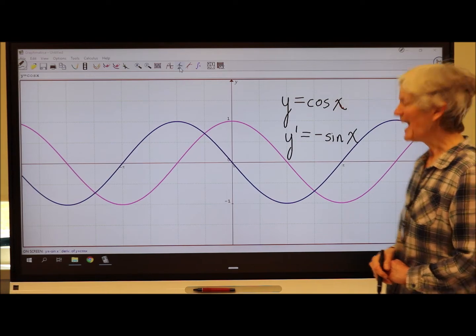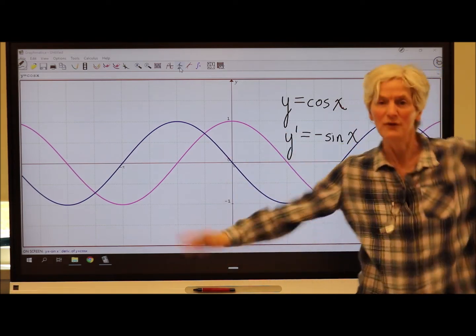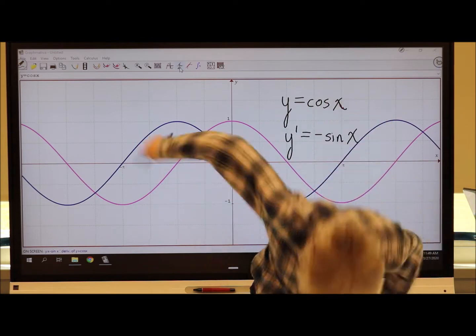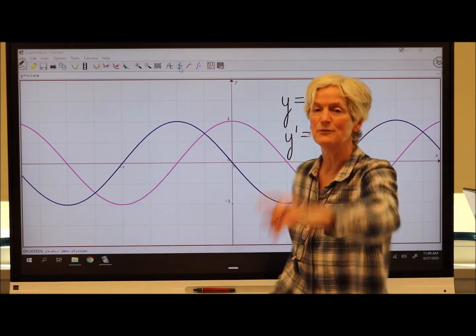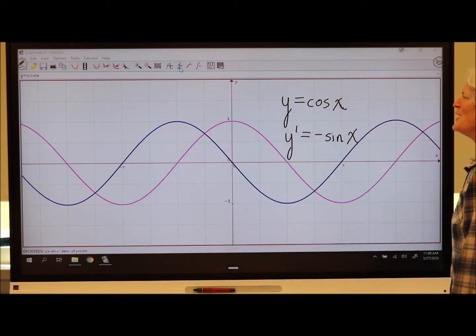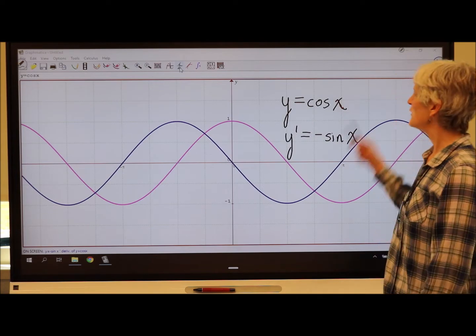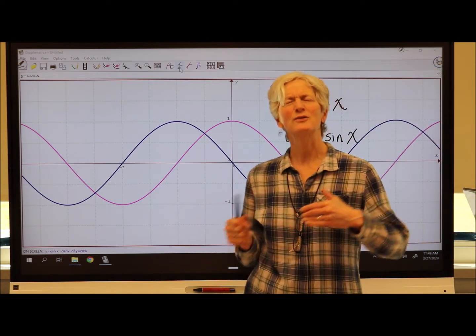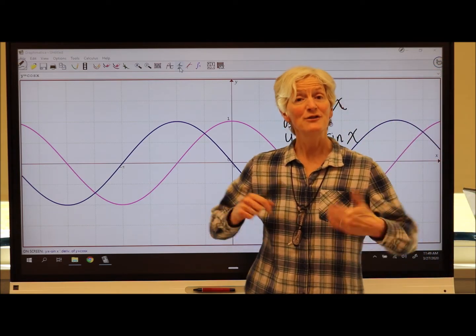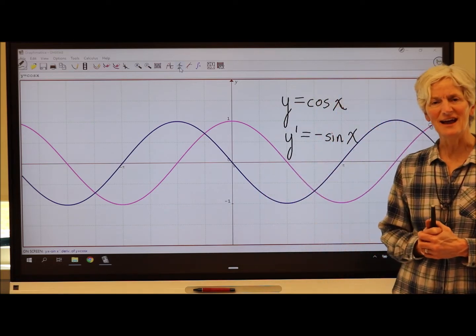It's a sine curve, but flipped upside down. Right? Sine curve, flipped upside down. Try that at home. So this is so cool. The derivative of sine of x was cosine of x. The derivative of cosine of x is negative sine x.